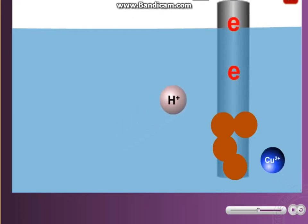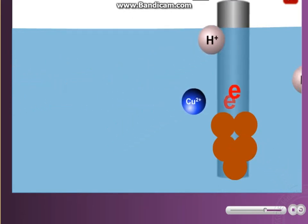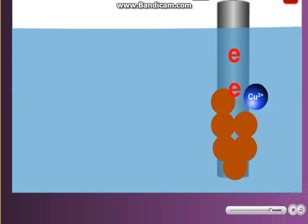In this case, the copper-2 ions are selectively discharged. Each copper-2 ion accepts two electrons to form a copper atom. Reddish-brown solid is formed at the cathode.